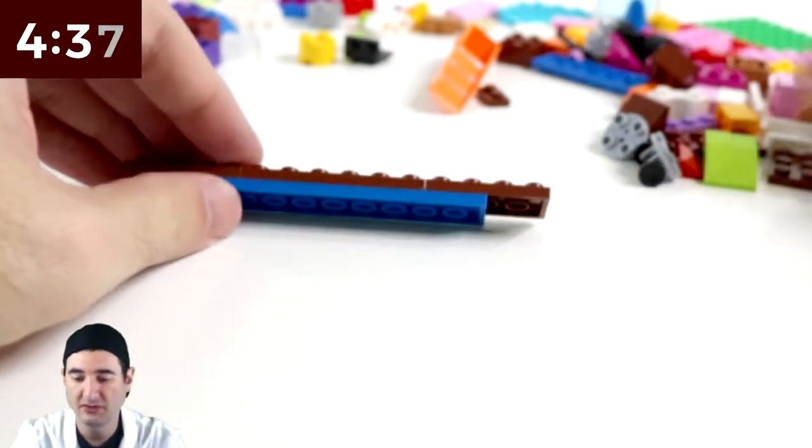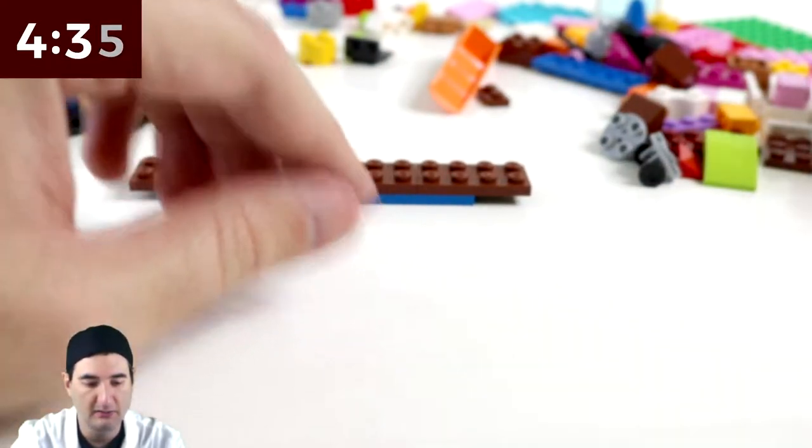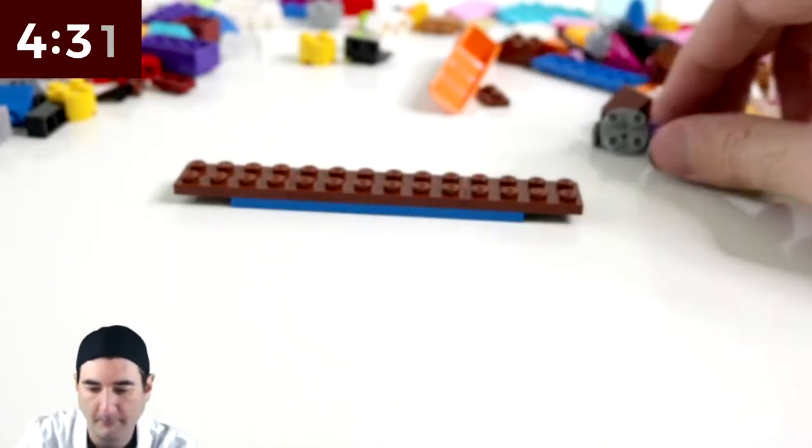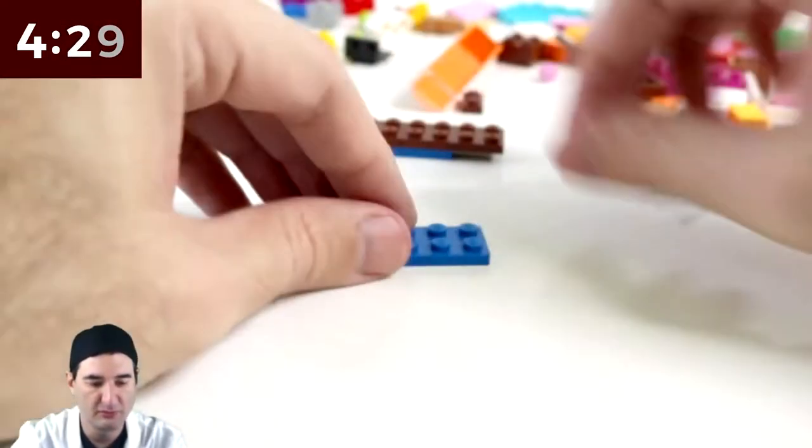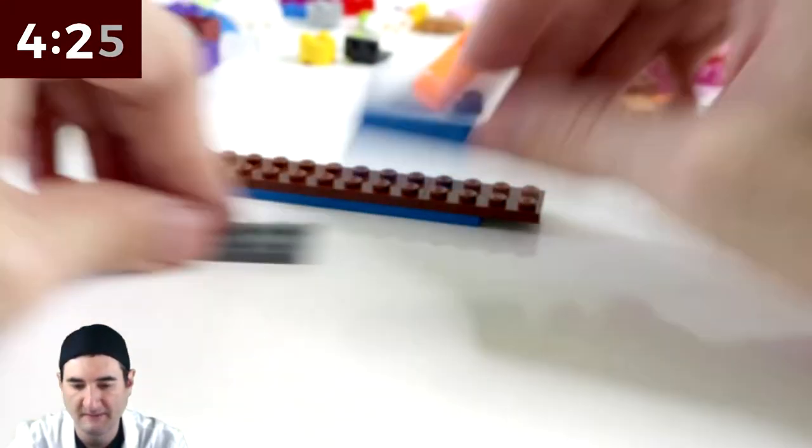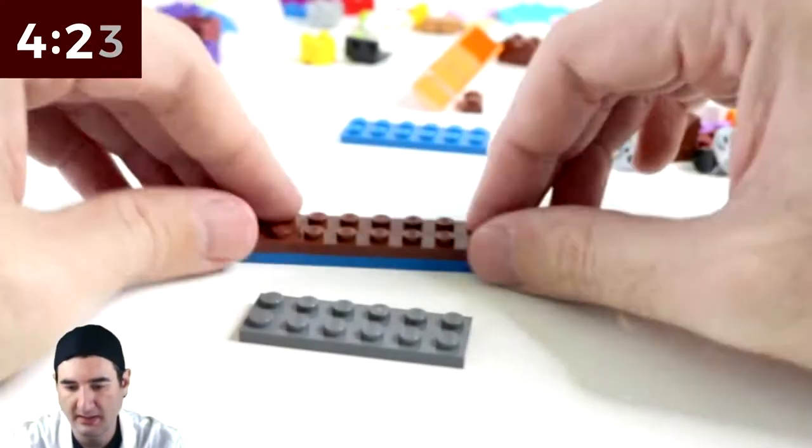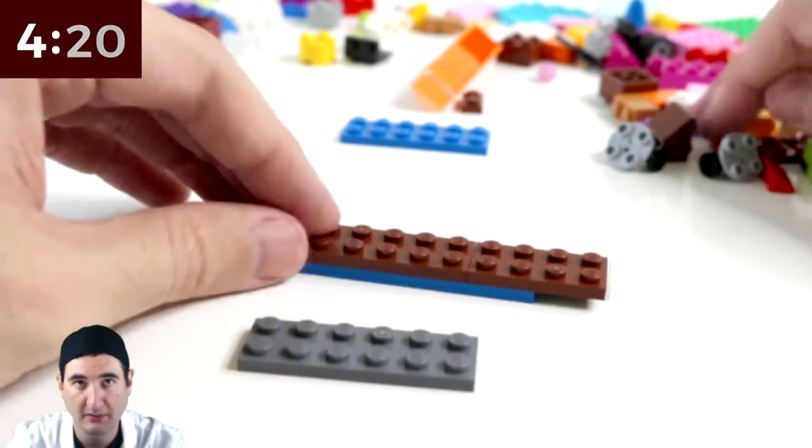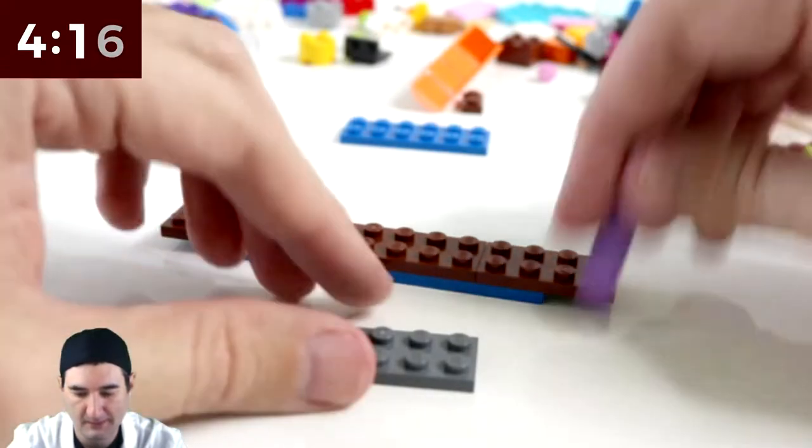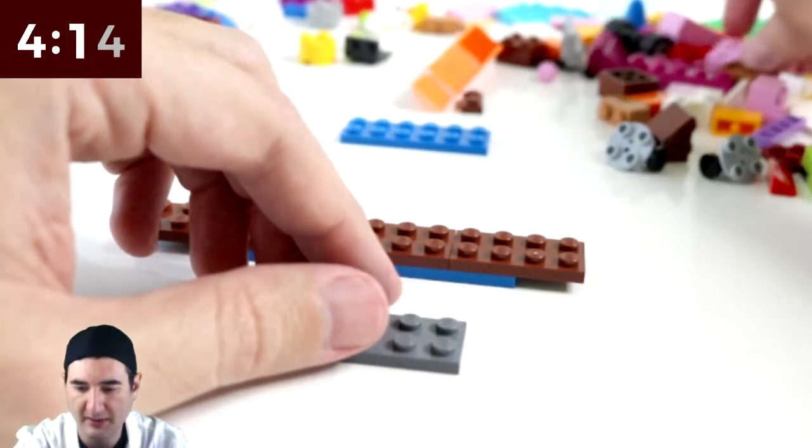It's going to be a small fuselage. And then maybe we do the pontoons. Maybe we do the pontoons. Use this as the tailpiece. And then up here, we're going to build out the pontoons.